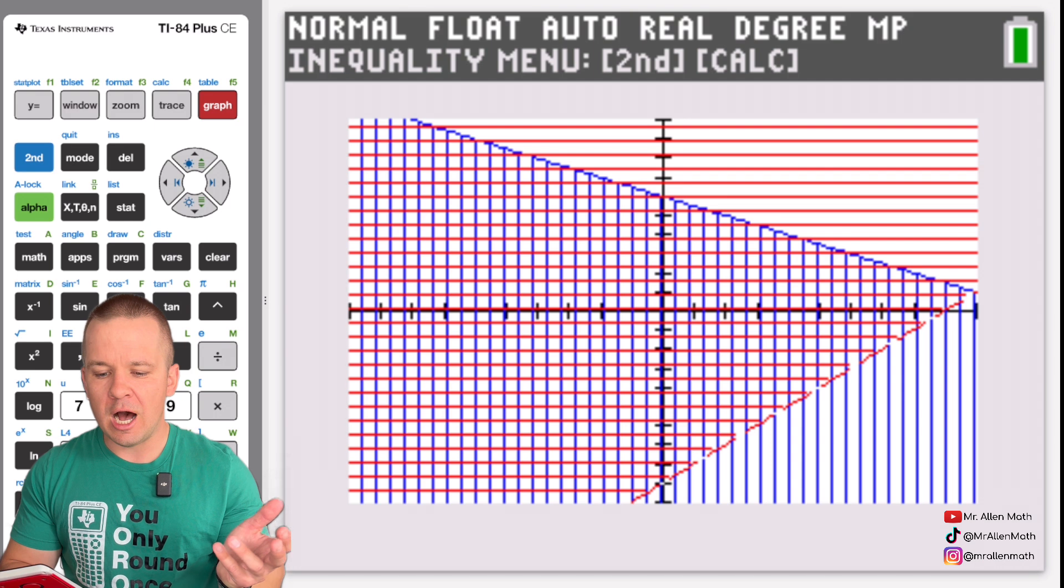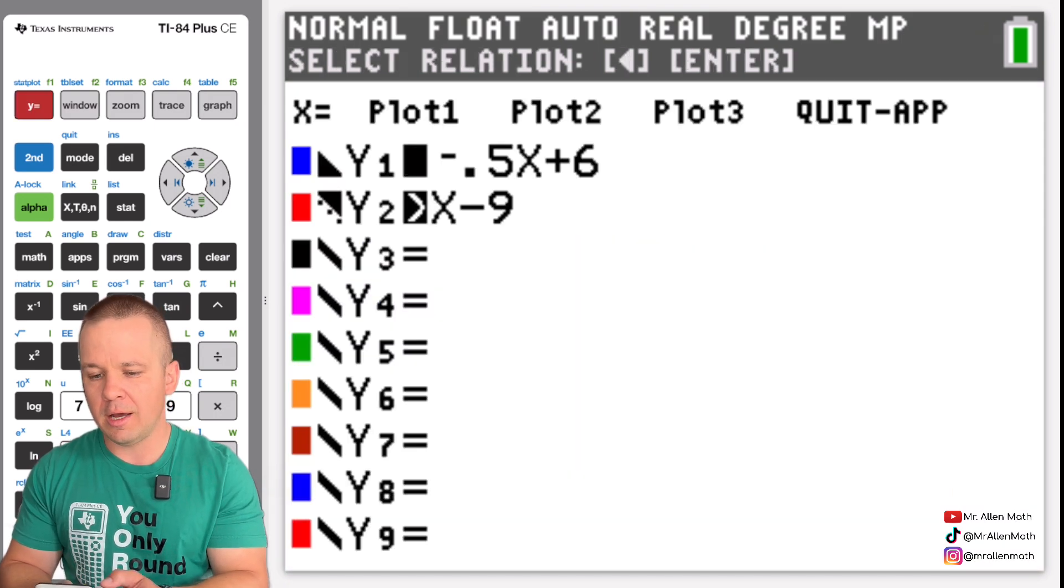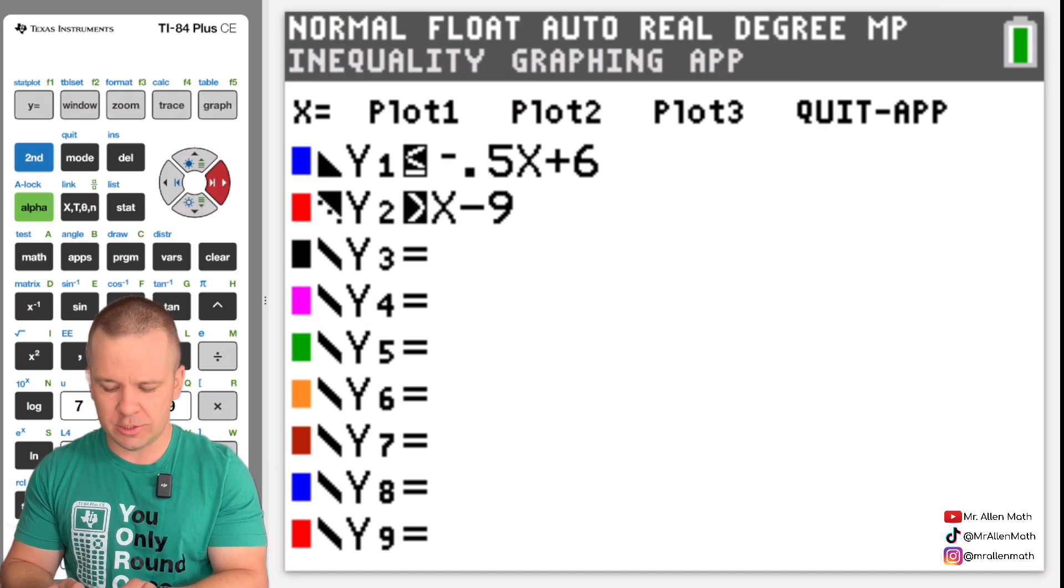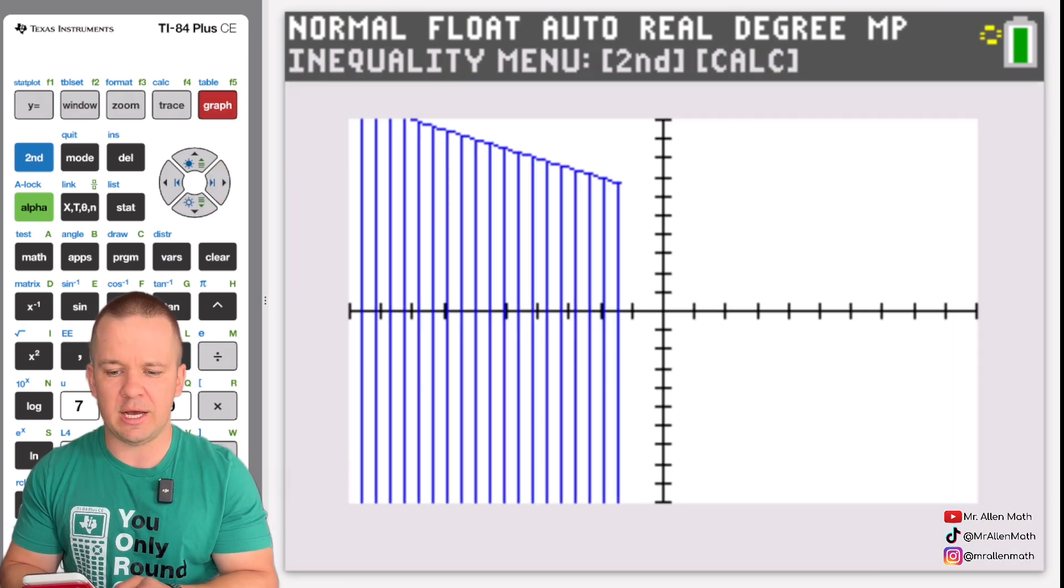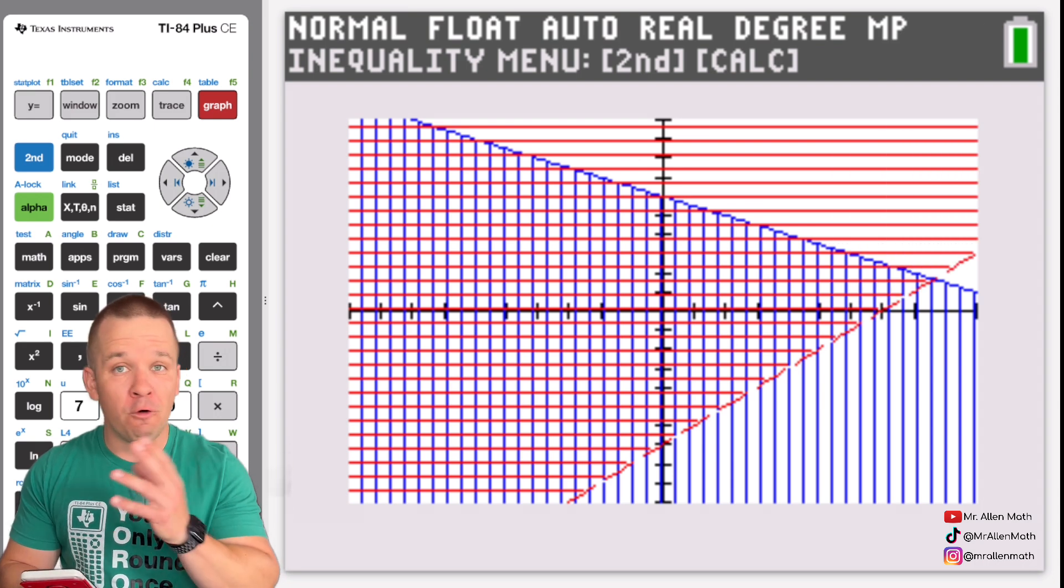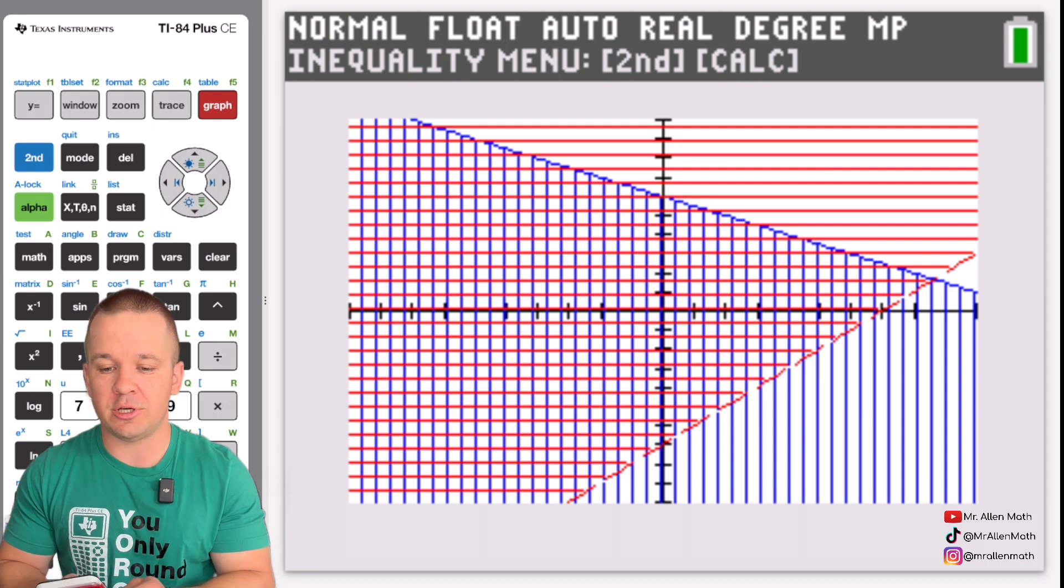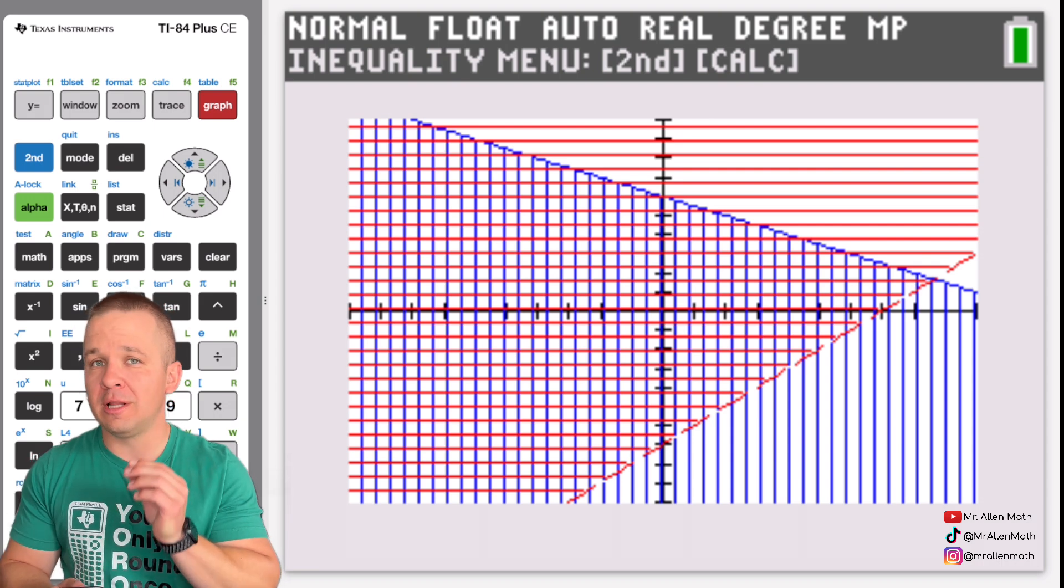All right so we see actually I'm going to shift it up just a little bit here because I'm going to show you guys something else and our intersection points are a little bit close. So let's just go to minus seven instead. Okay beautiful. All right so now we can see the overlap of our red and our blue right we can see the intersection there.